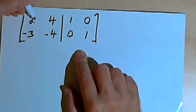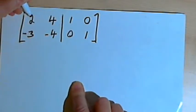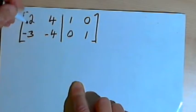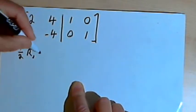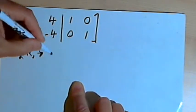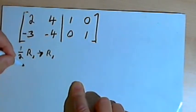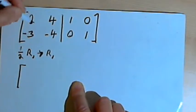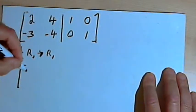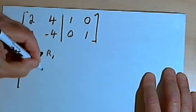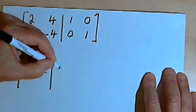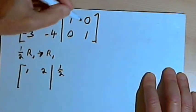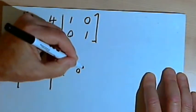Let's do this. I've got a 2 in the first position and I want that to be a 1. So I'm going to multiply by the reciprocal of 2, which is 1/2. So 1/2 times row 1 becomes the new row 1. Row 1 will be: 1/2 times 2 is 1, 1/2 times 4 is 2, 1/2 times 1 is 1/2, and 1/2 times 0 is 0.